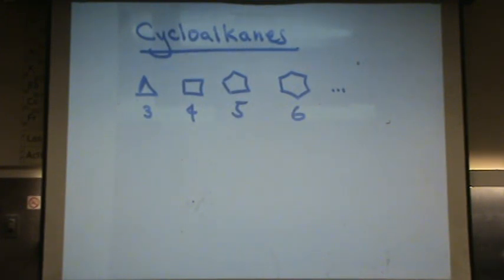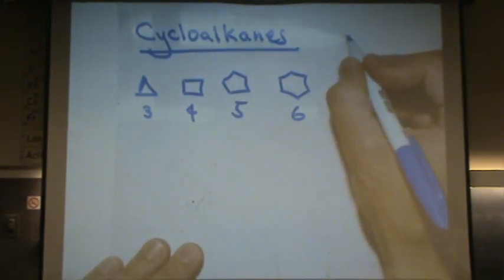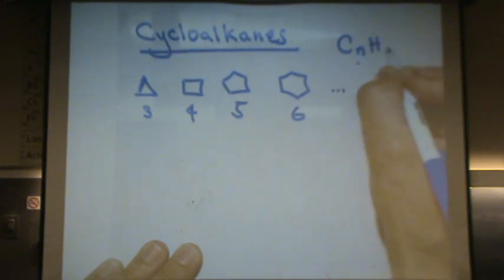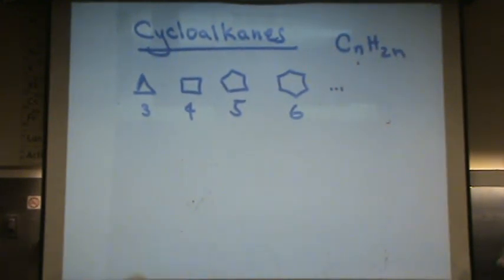Cycloalkanes have the molecular formula CnH2n. Where an alkane was 2n plus 2 for the hydrogen, this is missing two hydrogens. And something I'm going to talk about later, this has one degree of unsaturation, means it's missing two hydrogens.